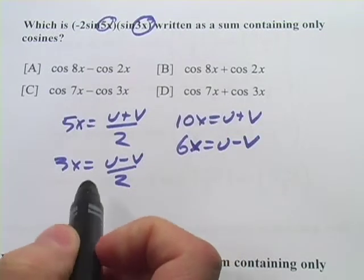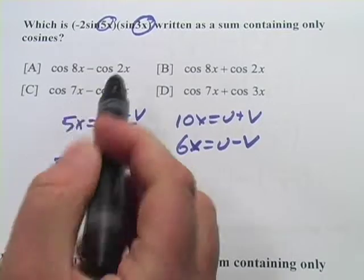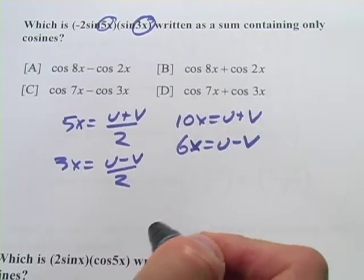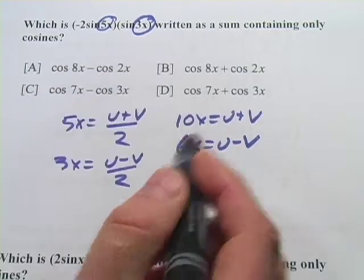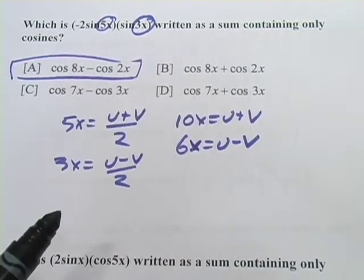So what we want to do now here is look for u and v. If I have 8x is u and 2x is v, 8 plus 2 that would equal 10x. 8 minus 2 that would equal 6x. So it looks like a is going to be our answer there.